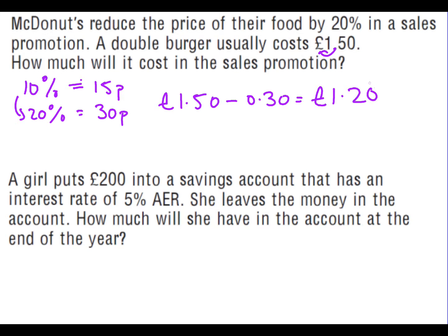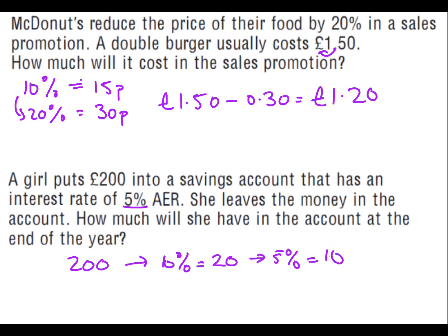A girl puts £200 into a savings account with an interest rate of 5%. How much will she have at the end of the year? 10% of £200 is £20, so 5% is £10. Because it's a savings account we add the £10 interest to the £200 she put in, so she will have £210 at the end of the year.